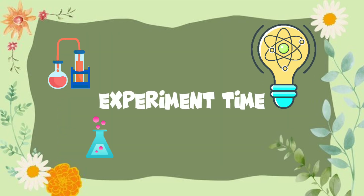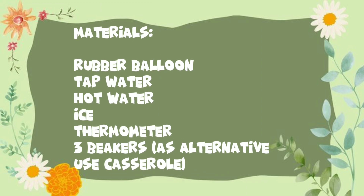To know more about Charles's Law, an experiment called Charles's Law will be conducted. The materials needed are: a rubber balloon, tap water, hot water, ice, a thermometer, 3 beakers as an alternative, and a casserole.